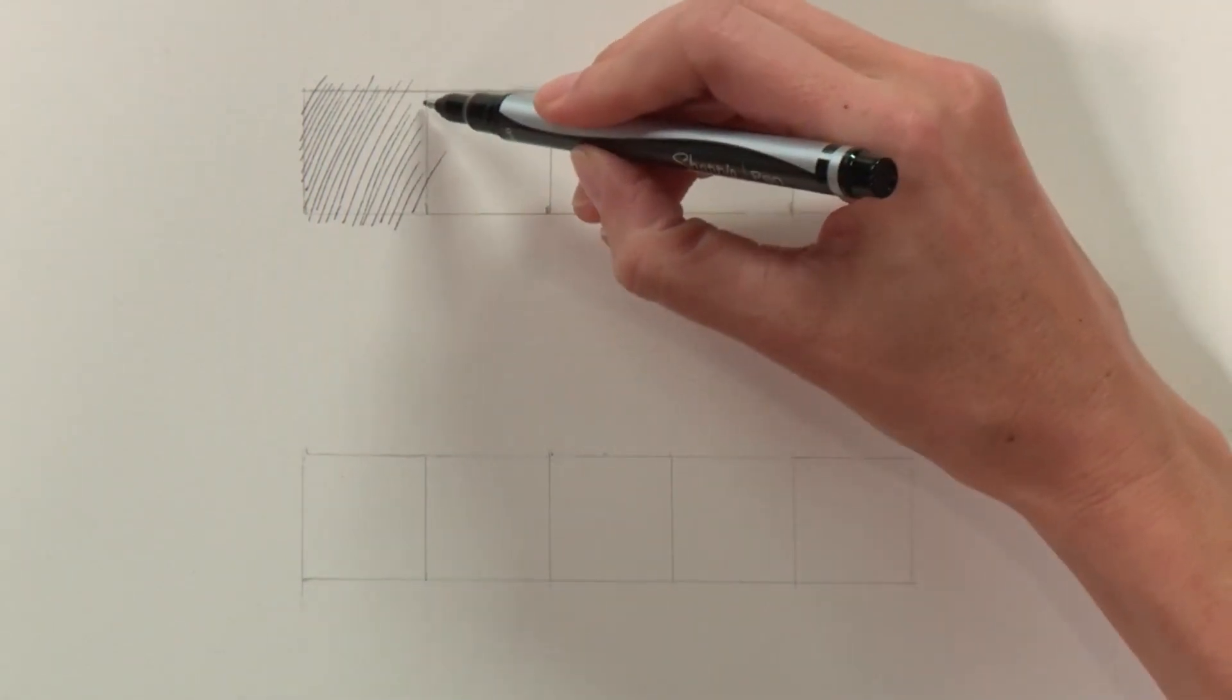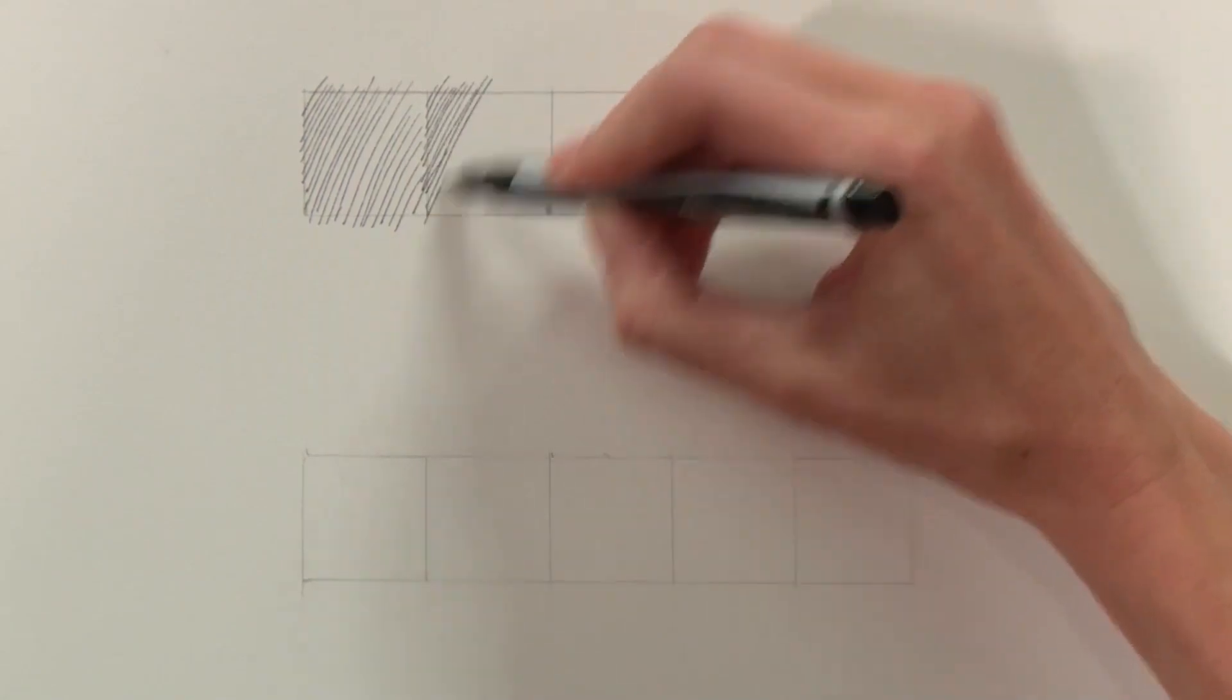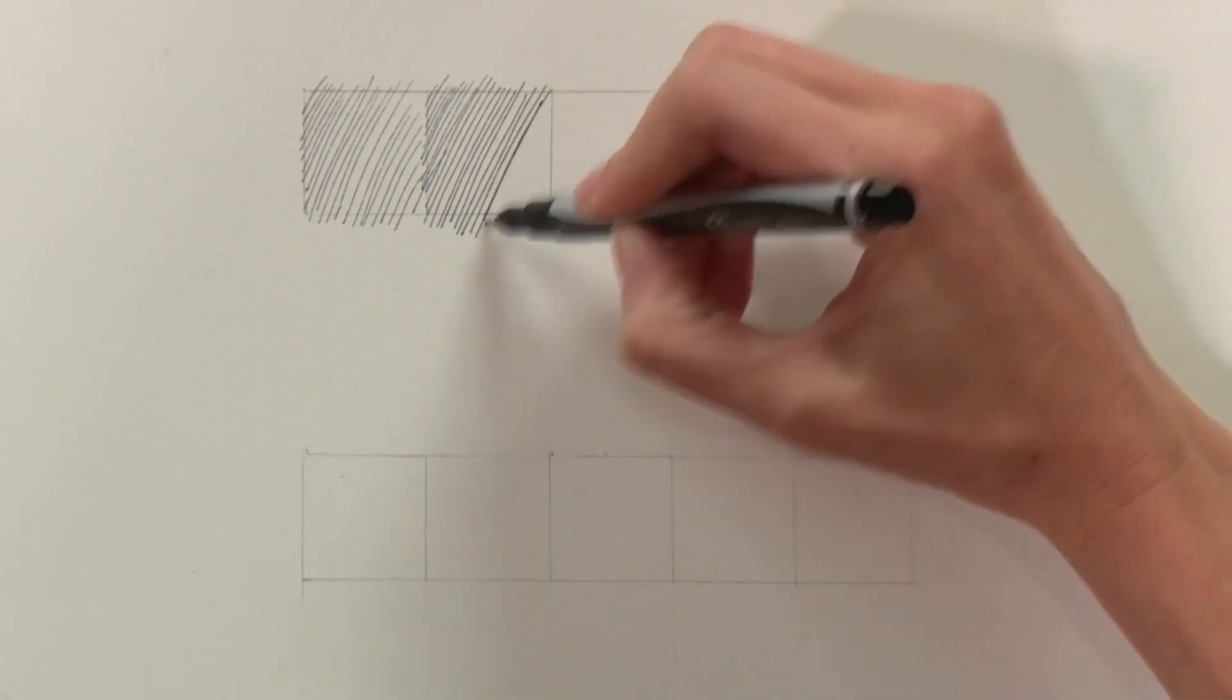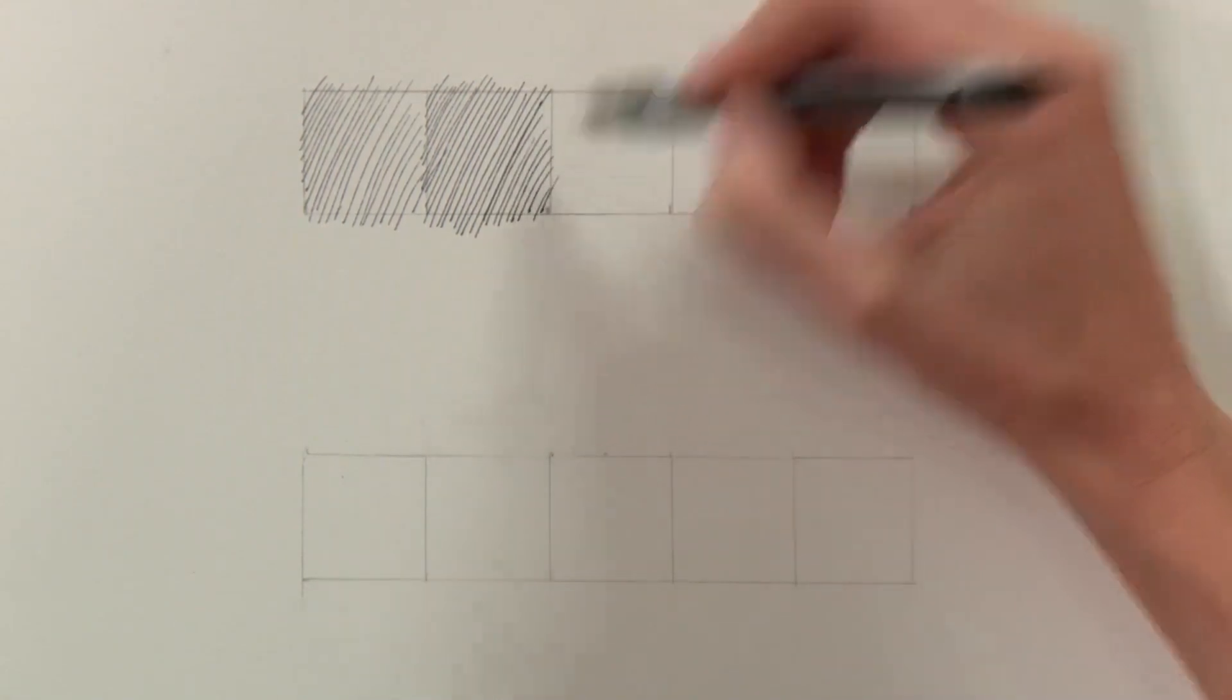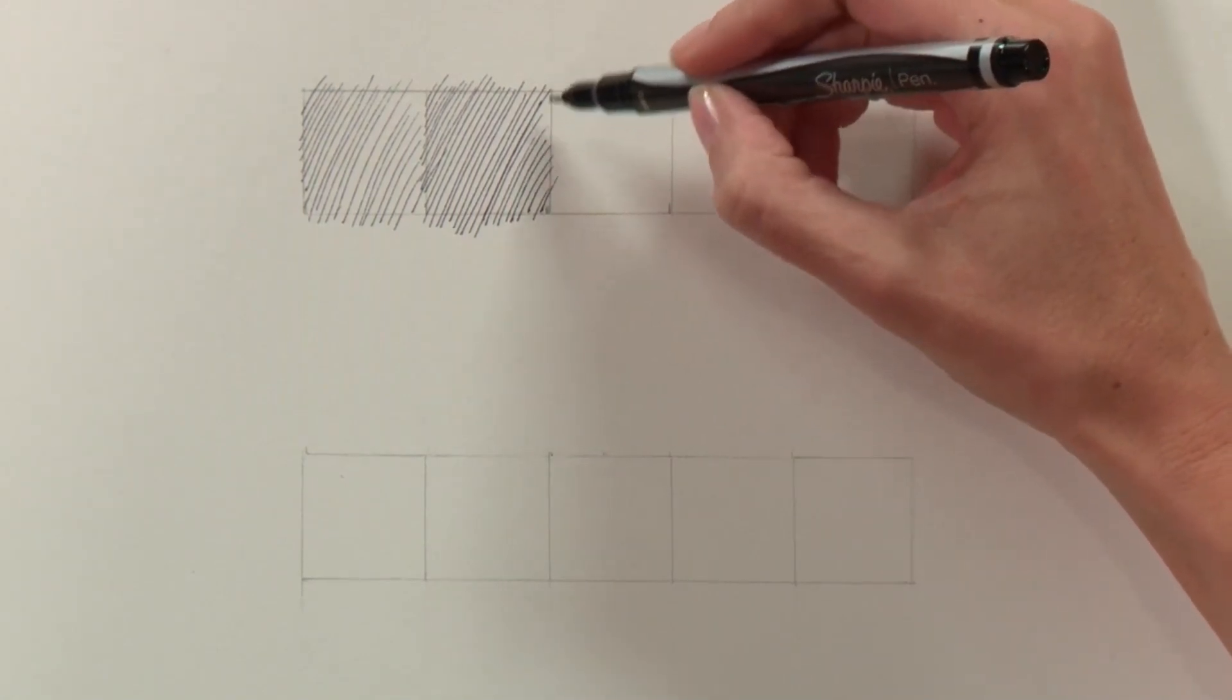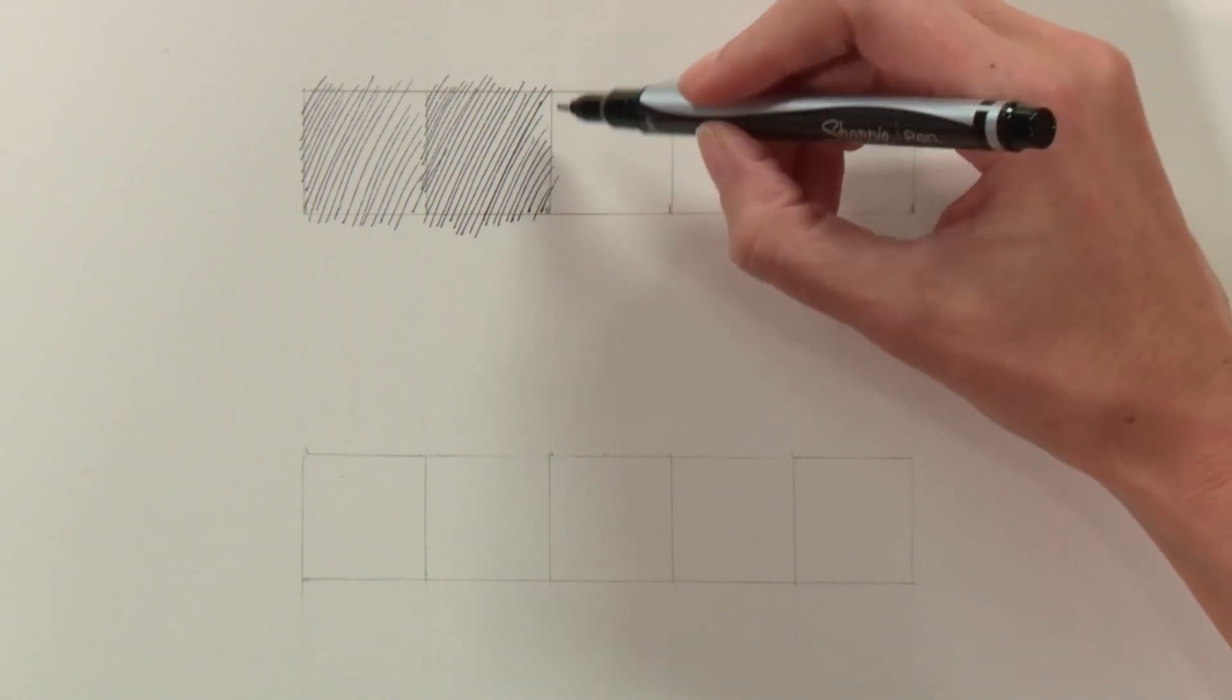My next box should have lines that are closer together. The idea is to make them appear slightly darker when viewed from a distance. And these can go in any direction, by the way. I just happen to like this diagonal left to right, but they can certainly go up, down, side to side, whatever way you want.